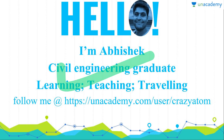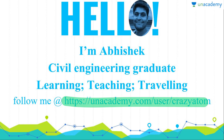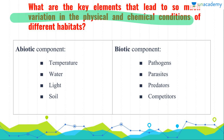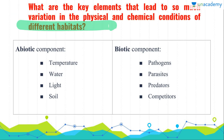Here you can see some information about me and you can follow me at this email link below for more further updates. Now let's begin with a question, because I think the question-answer format is the best way to remember and understand things. So what is the question? What are the key elements that lead to so much variation in physical and chemical conditions of different habitats?